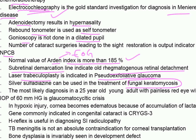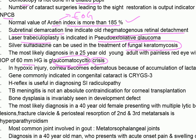The most likely diagnosis in a 25-year-old with painless red eye and intraocular pressure of 60 mmHg is glaucomatocyclitic crisis. In hypoxic injury, the cornea becomes edematous because of accumulation of lactate.